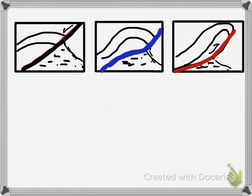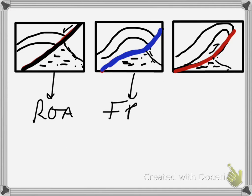Putting it together, you can have different configurations of anticlinal structures in outcrops or subsurface seismic data, depending on the behavior of the underlying mobile substrates. In the first case, we have the simple rollover anticline. In the second case, you have a simple fault bend fold — largely because of the bending of the fault plane. While in the third scenario, you have a fault propagation fold.